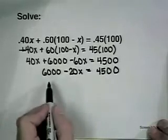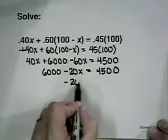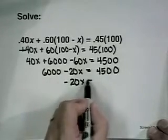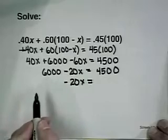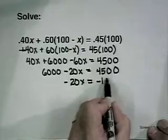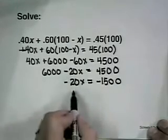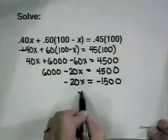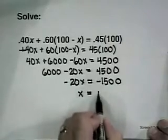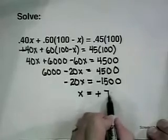Then we want to subtract 6000 from both sides and divide both sides by negative 20. That will give us a positive answer of 75.